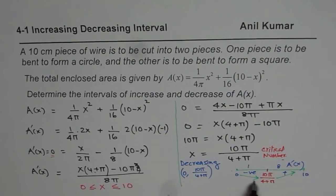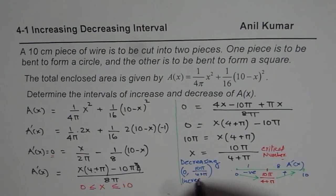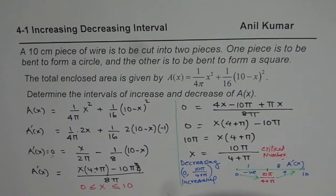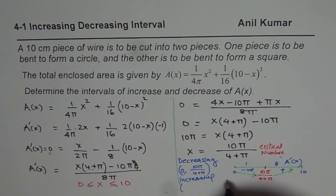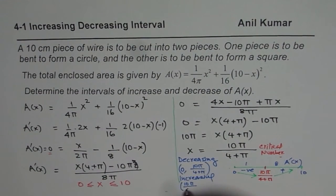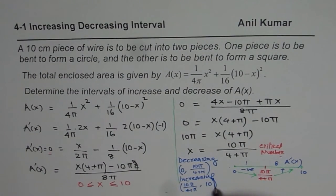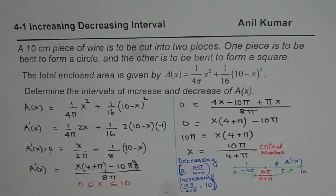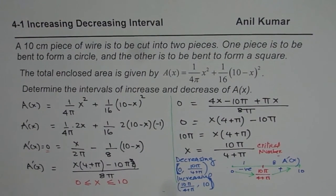The interval of decreasing is from 0 to 10π/(4 + π), since the derivative is negative on this interval. The interval of increasing is from 10π/(4 + π) to 10, since the derivative is positive there. Both endpoints can be included. That is how you answer this question.